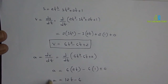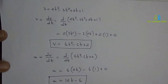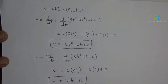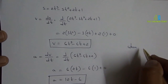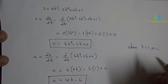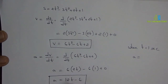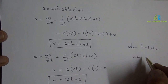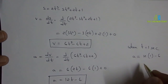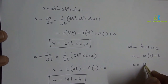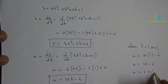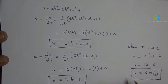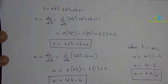This is the relation for acceleration. It is asked to calculate acceleration when t is equal to 1 second. Substituting the value of t in the equation: 12 into 1 minus 6, so acceleration is equal to 12 minus 6, which is equal to 6 meters per second squared. The acceleration after 1 second is 6 meters per second squared.